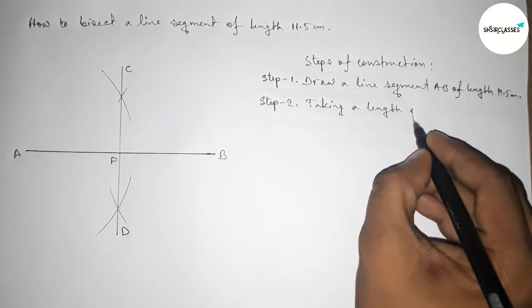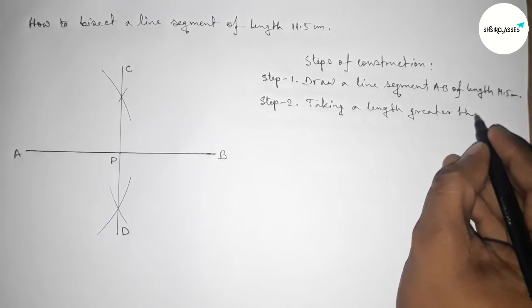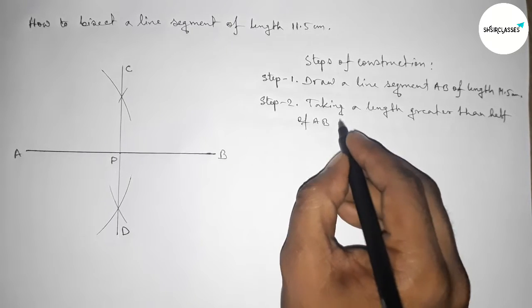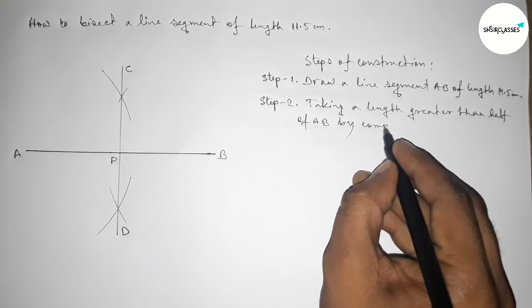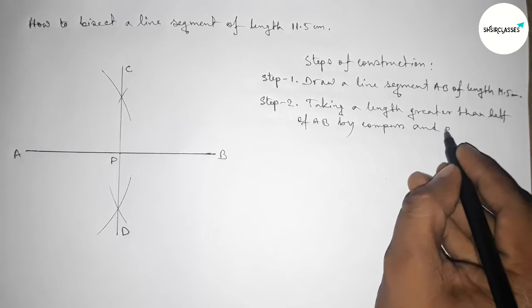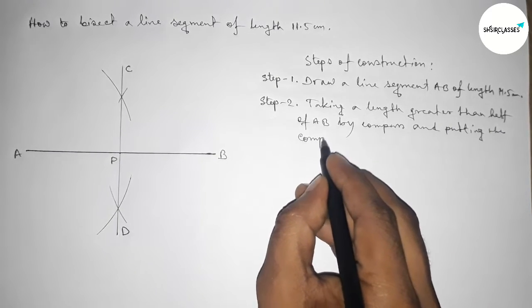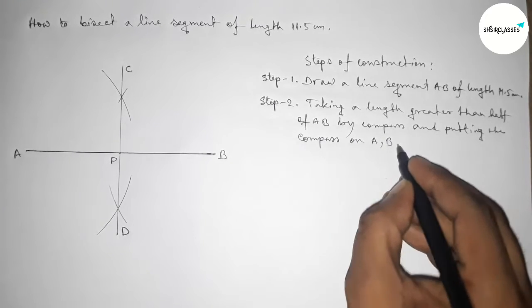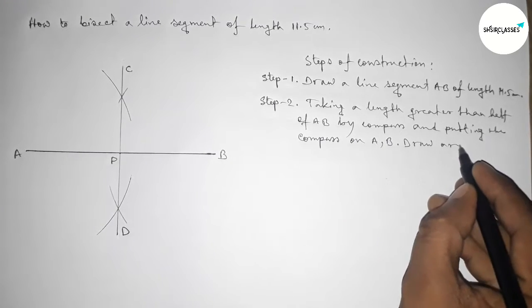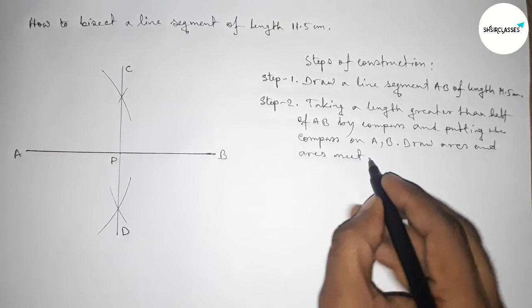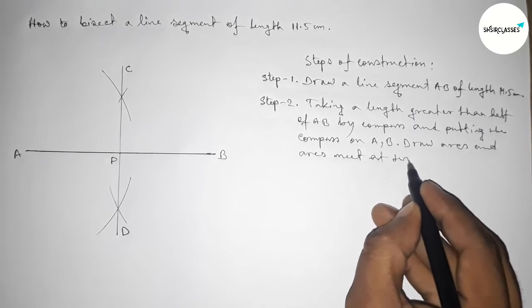In step two, first taking a length greater than half of AB by using compass, and putting the compass on point A and B, and draw arcs.